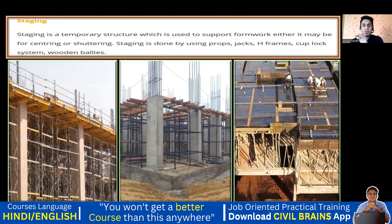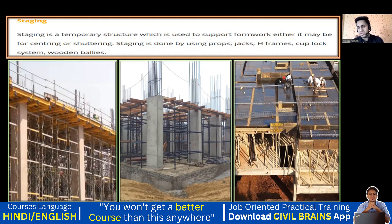Staging is a temporary structure because right now it is required, but once you pour the slab and do the curing — after about 15 to 21 days the slab gains strength — we then remove it, which is called de-shuttering. That is why it is a temporary structure used to support the formwork.